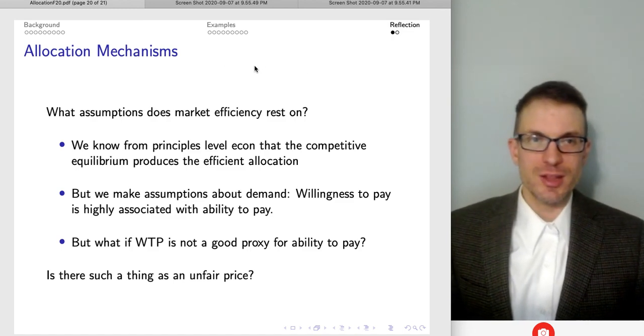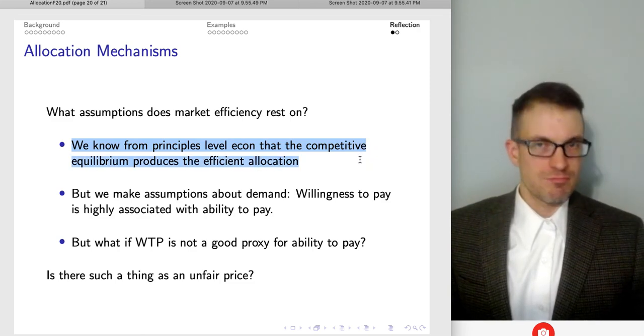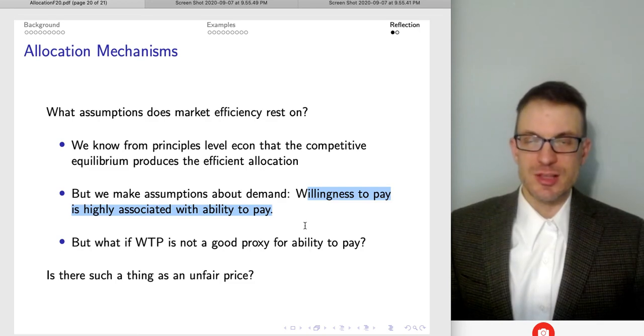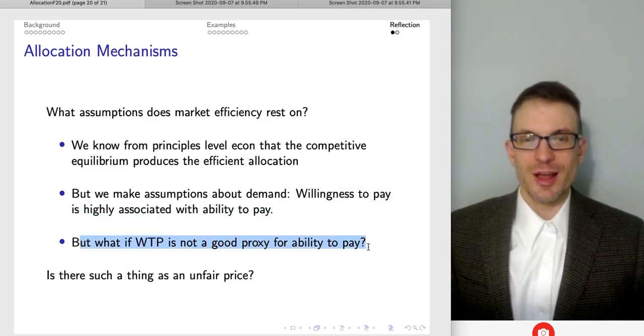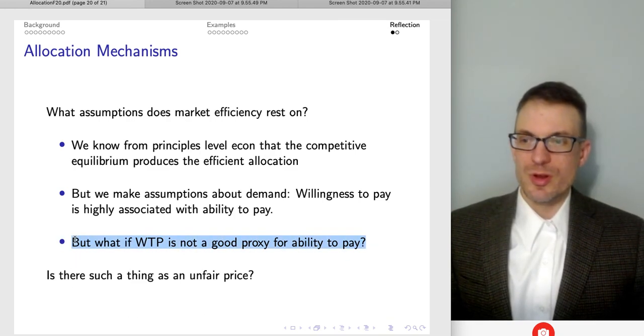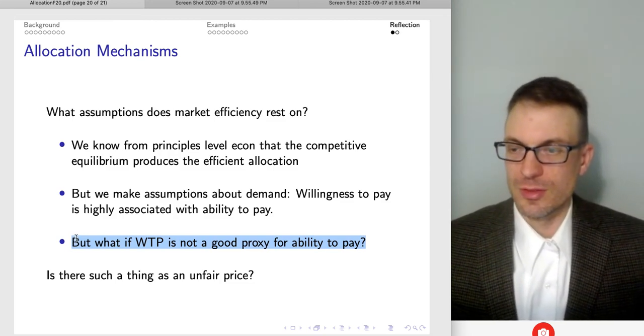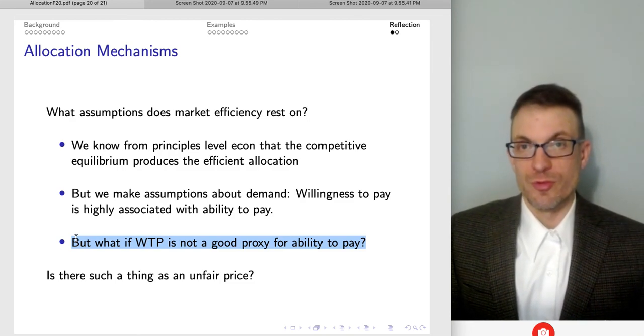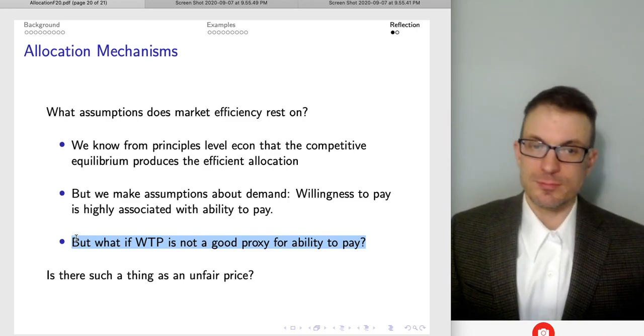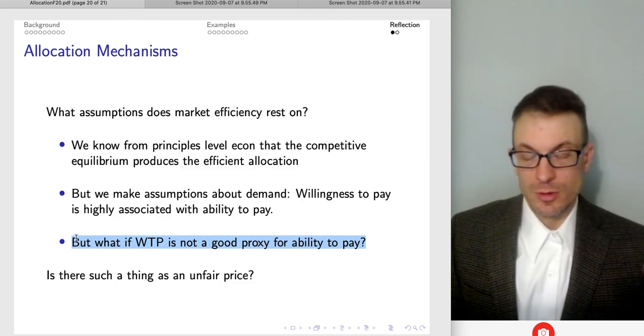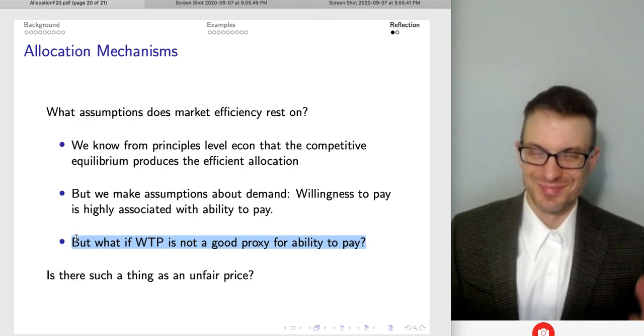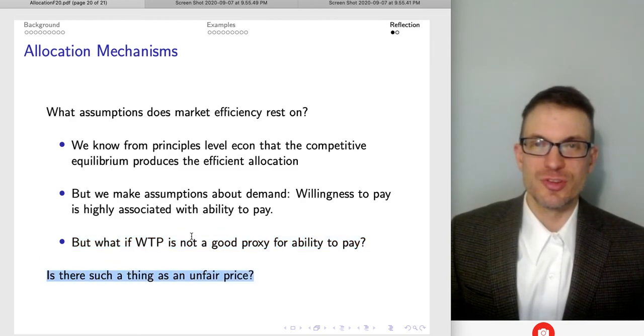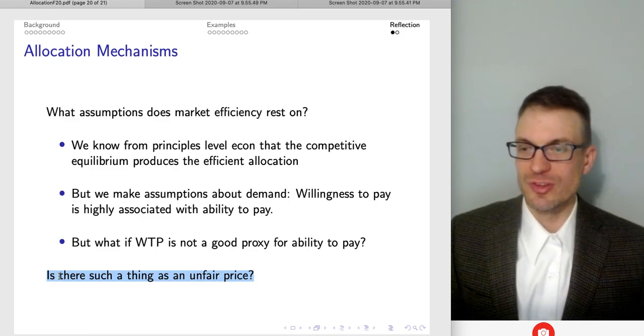So now I want to reflect on the examples we've got here and then thinking about market efficiency more generally. So we know from principles-level econ and from the very beginning, competitive equilibrium gives us the efficient allocation. We make assumptions about demand. Willingness to pay is highly associated with ability to pay. But what if willingness to pay is not a good proxy for ability to pay? What if these are different? And so now we worry that this is going to introduce not only the inequality concern, but also an inefficiency concern as well. Because the argument for markets, one of the strong arguments tends to be, well, market created prices are going to direct resources to those who value them the most. And this means that we're going to get the efficient outcome. But what if those who value the item the most are unable to afford it? So another thing I want to reflect on, another question I want to pose, and this is kind of a question I want to actually leave us with after I go to the next slide, which is, is there such a thing as an unfair price?